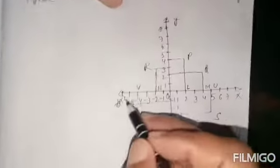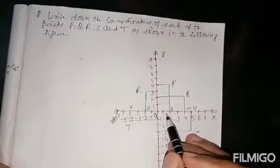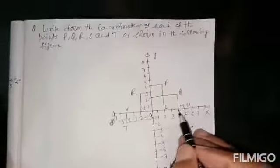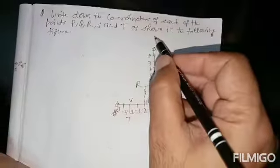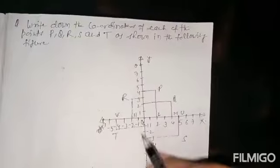Now write down the coordinates of each of the points P, Q, R, S, and T as shown in the following figure. Here X'OX is the horizontal line and YOY' is the vertical line. OX and OY distances are taken positive, and OX' and OY' distances are taken negative. The X'OX distance is divided into units: 1 unit, 2 unit, 3 unit, 4 unit, and so on. OX' and OY' are taken negative: minus 1, minus 2, minus 3, minus 4, minus 5, and so on.